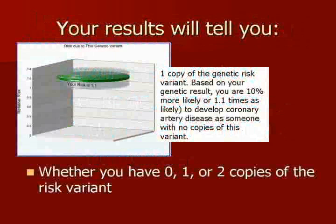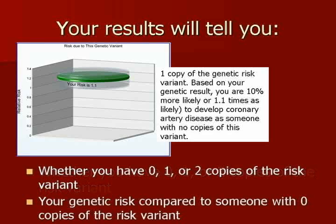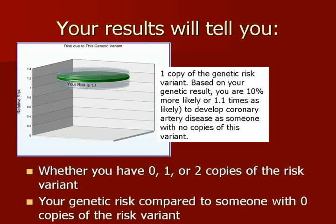Remember that we all have two copies of every gene. We inherit one copy from our mother and one from our father. This means that for every genetic variant the CPMC study looks at, you can have either zero, one, or two copies of the genetic risk variant. As you can see, your results will tell you how many copies of the risk variant you have and how your genetic risk compares to someone with zero copies of the risk variant.